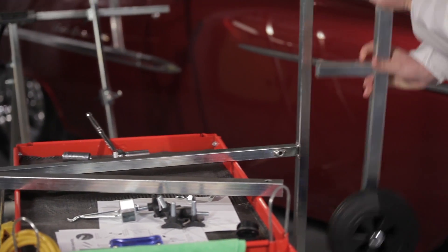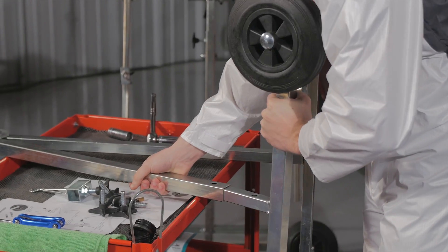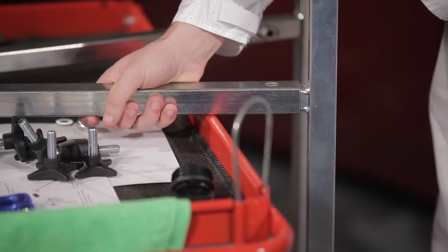Attach the wheelbase bar to the front leg. Slot the bottom end of the front leg onto the mounting tube in the center of the wheelbase bar and line up the bolt holes.